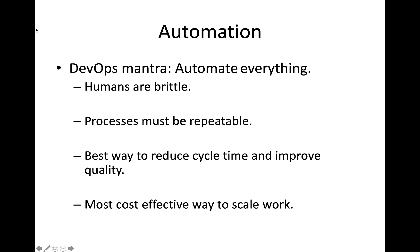Automation is also one of the best ways to reduce cycle time, because computers can do things way faster than human beings can. If we need to improve our testing process or our deployment process, one of the best ways to do that is to introduce automation. And if we need to scale our work, automation is really the only way we can do it effectively, outside of simply hiring more people, which is a very expensive proposition.